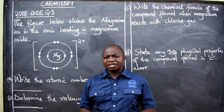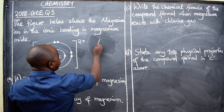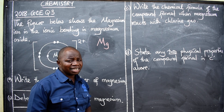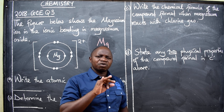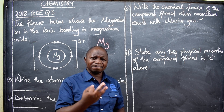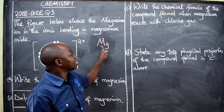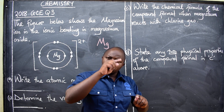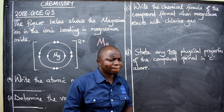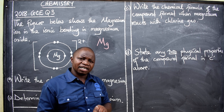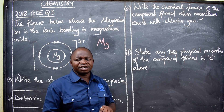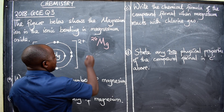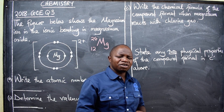Magnesium, when you look at the periodic table, is written with the symbol Mg. Take note that elements with two-letter symbols always have the first letter capital and the second letter small. For single-letter symbols, it should always be capital. Now, magnesium on the periodic table has numbers associated with it — you'll find 24 on top and 12 below.